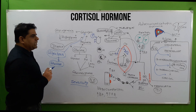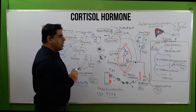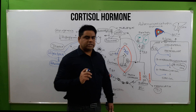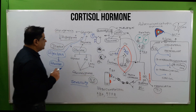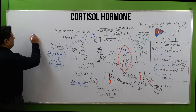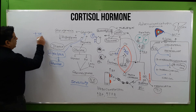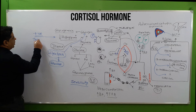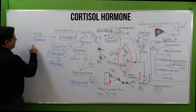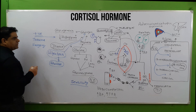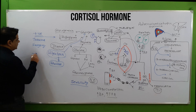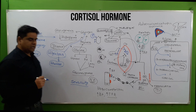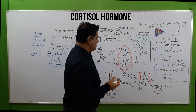Stimulants for cortisol include hypoglycemia, trauma, surgery, and inflammation processes. Inhibitors of cortisol production include hyperglycemia, which provides negative feedback to suppress cortisol release.